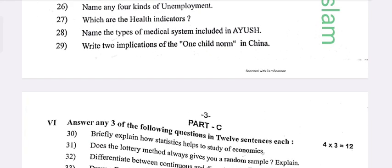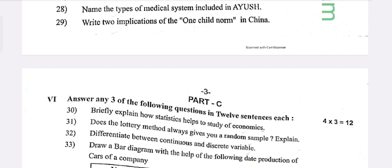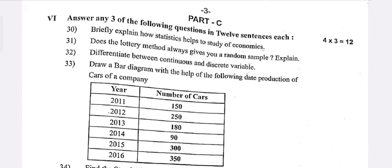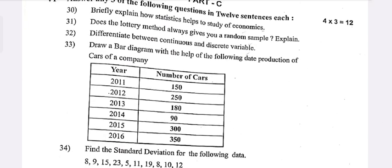Twenty-fourth: What are the two major sources of human capital in a country? Twenty-fifth: Mention the benefits of organic farming. Twenty-sixth: Name any four kinds of unemployment. Which are the health indicators included in the right to medical system?